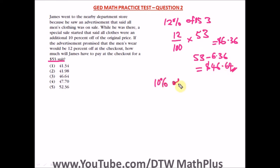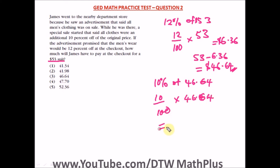We now calculate 10% of $46.64: that's 10 over 100 times 46.64. Punching that into your calculator, we get $4.66.